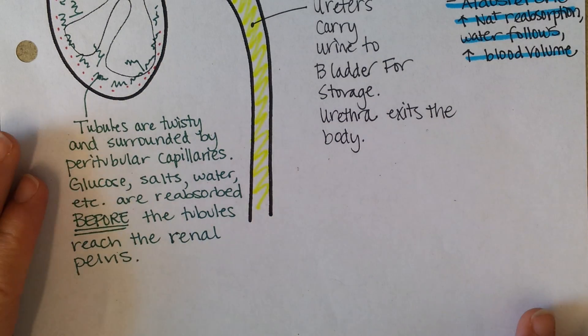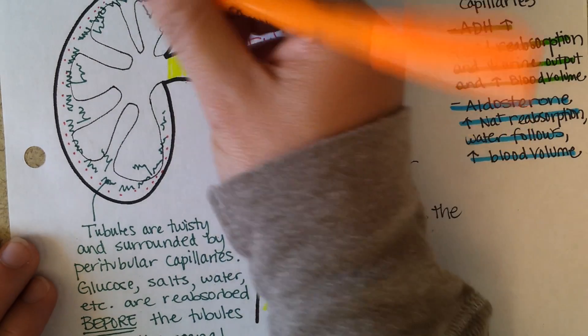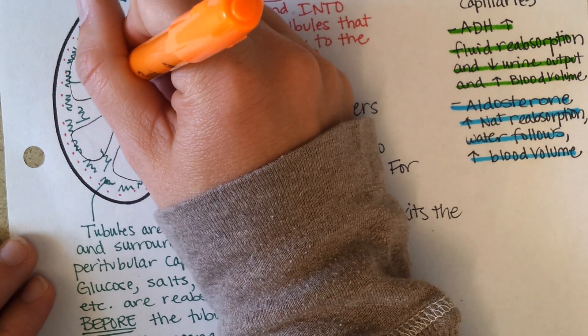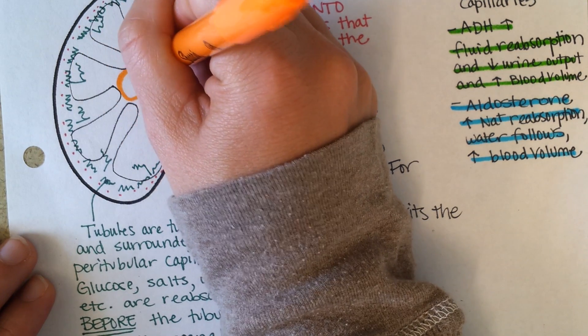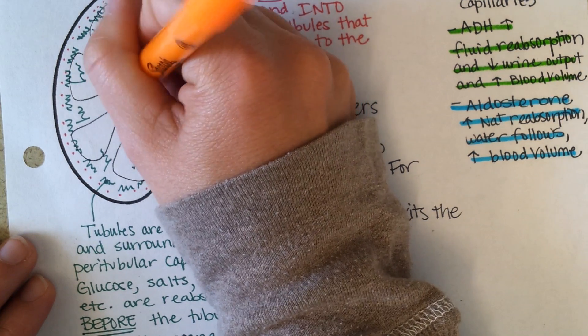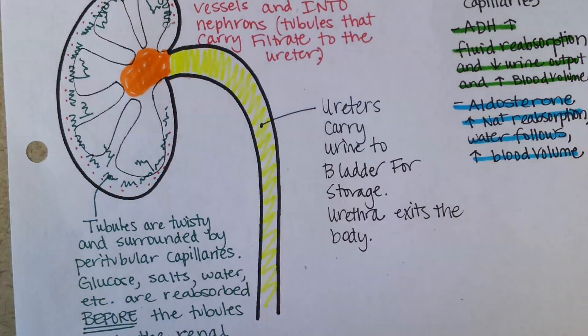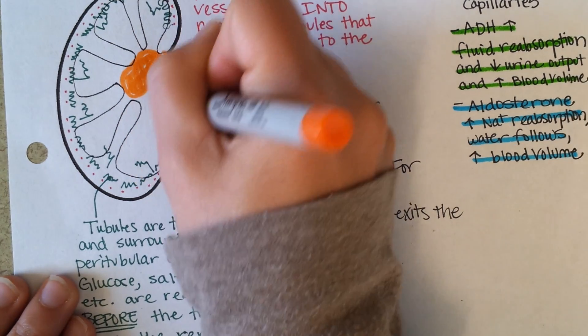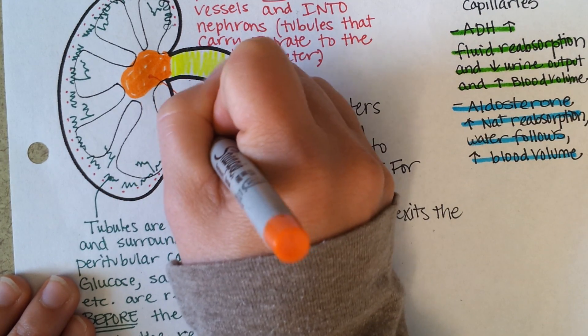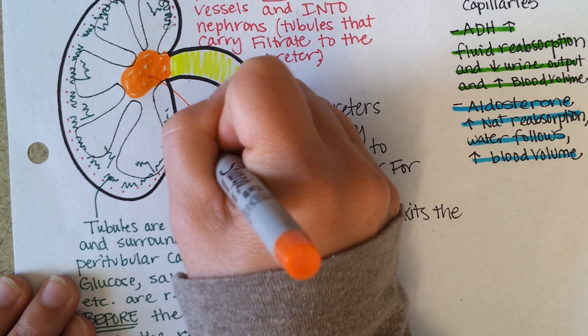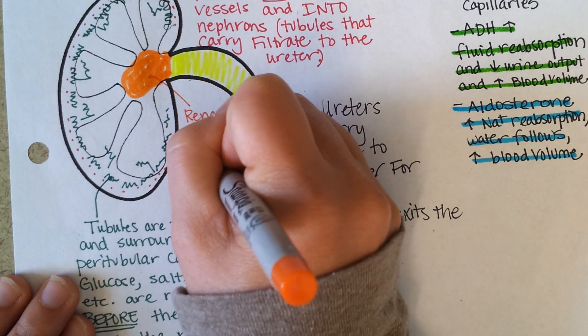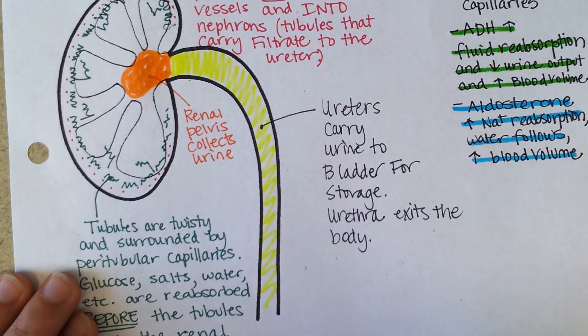You can use an orange highlighter to put on here. So here's the renal pelvis, and if the fluid makes it this far, it now has to be part of the urine. So it collects the urine and then it passes into the ureter.